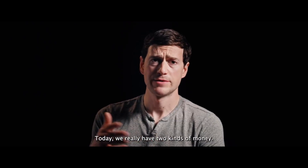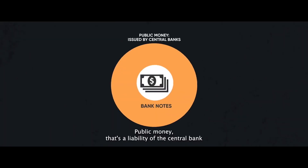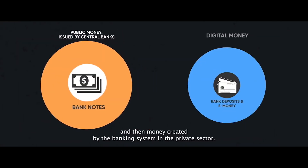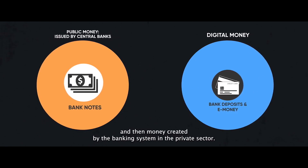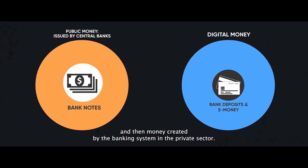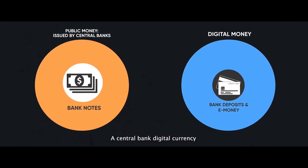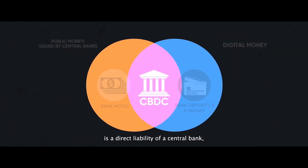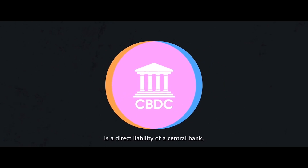Today we really have two kinds of money: public money, that's a liability of the central bank, and then money created by the banking system in the private sector. A central bank digital currency is a direct liability of a central bank, and it allows the government total control.